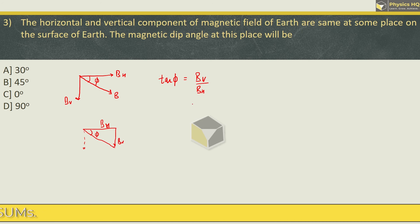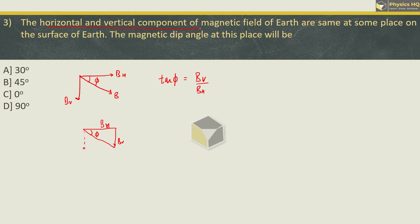Now they are saying that horizontal and vertical components are the same. What is BV upon BH? One. So we got tan δ equal to 1. Now try and remember, at which angle of tan do we get answer equal to 1? That comes at angle equal to 45.